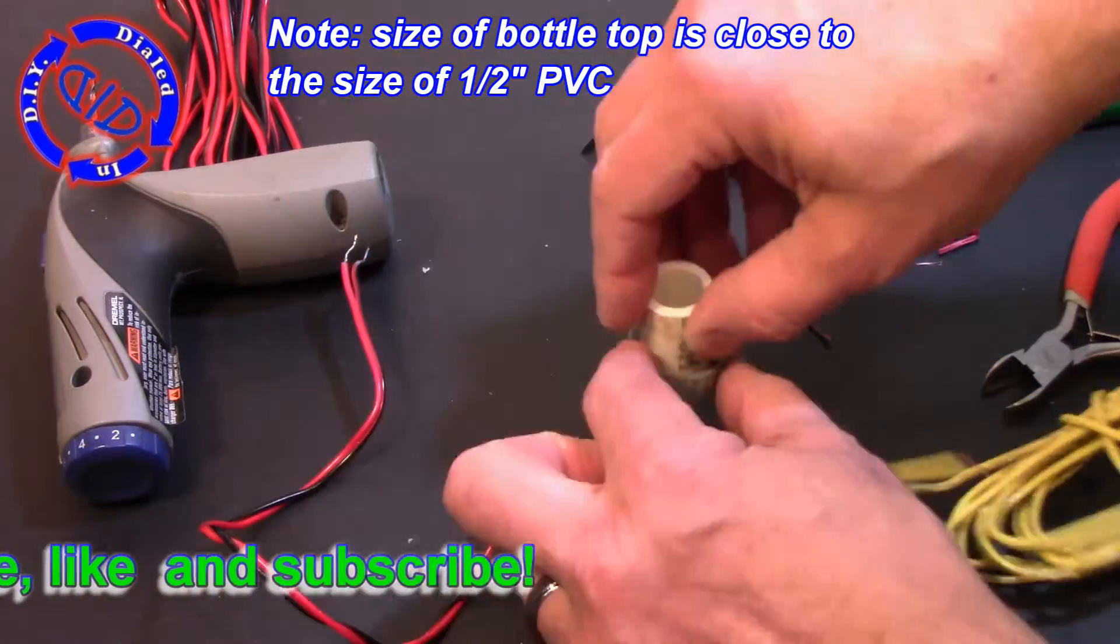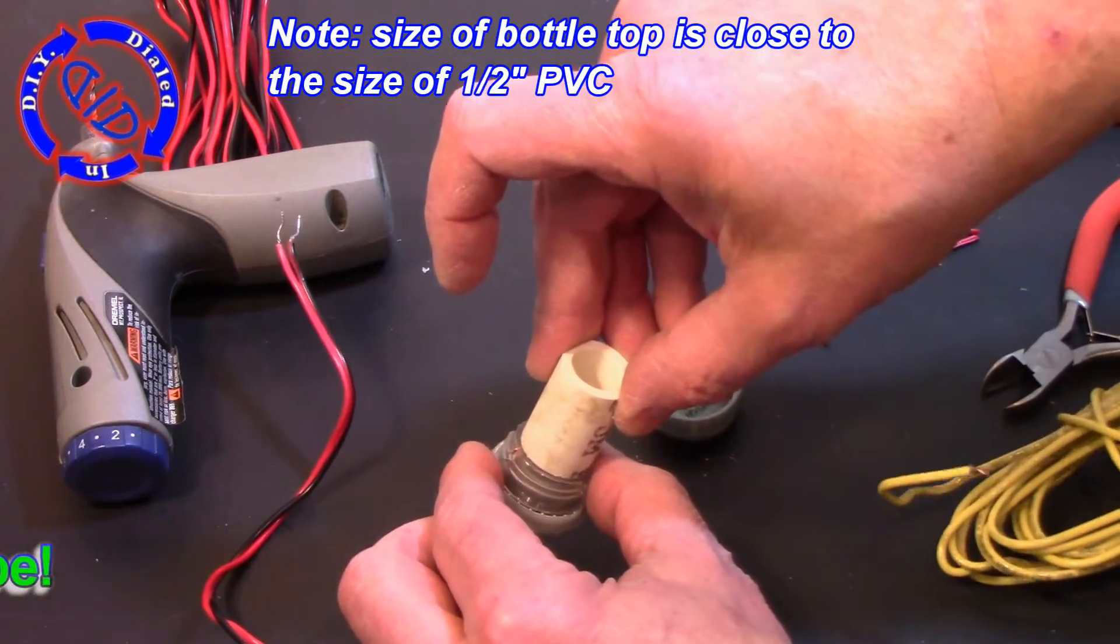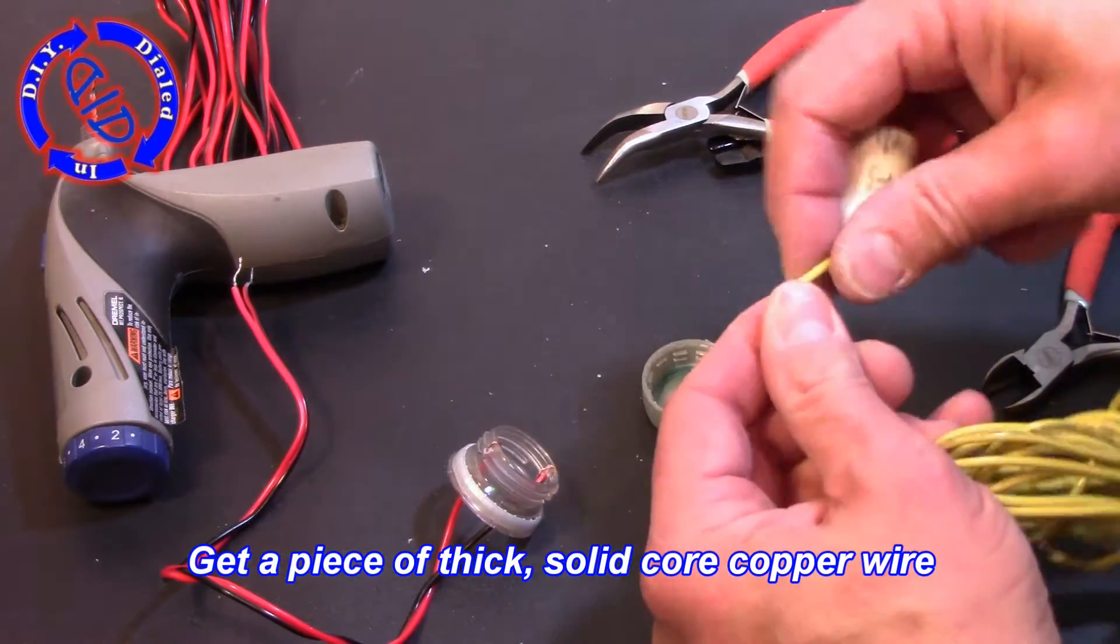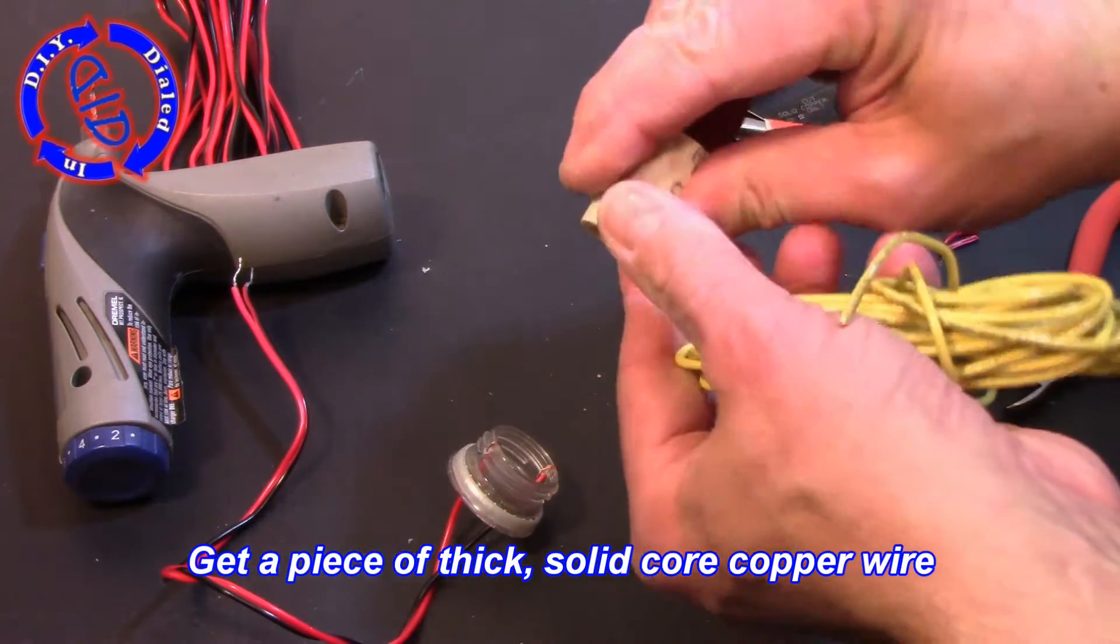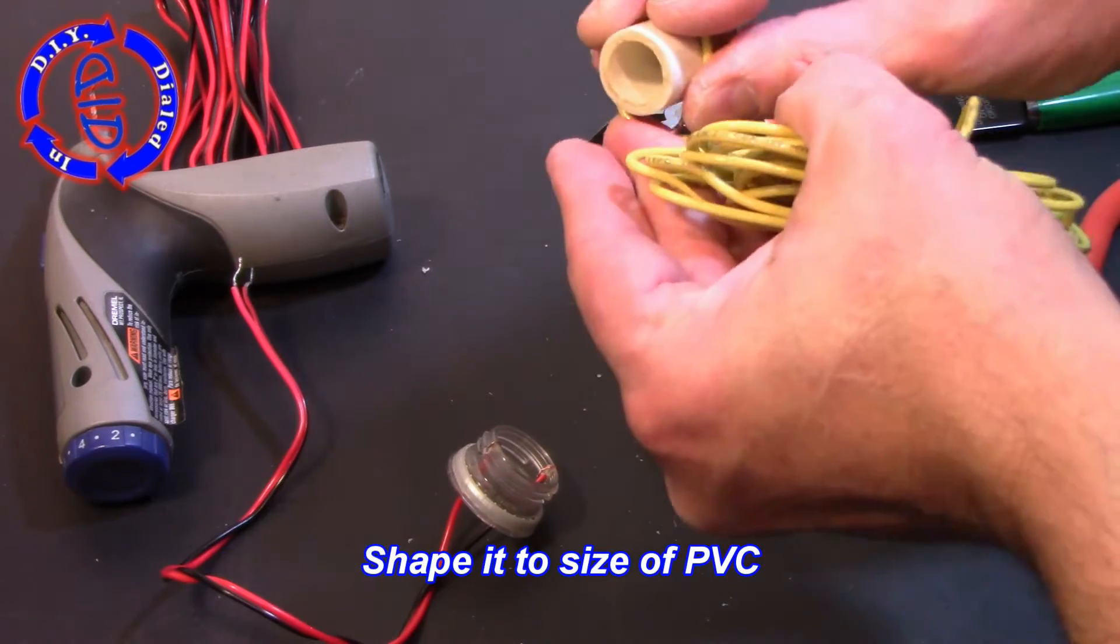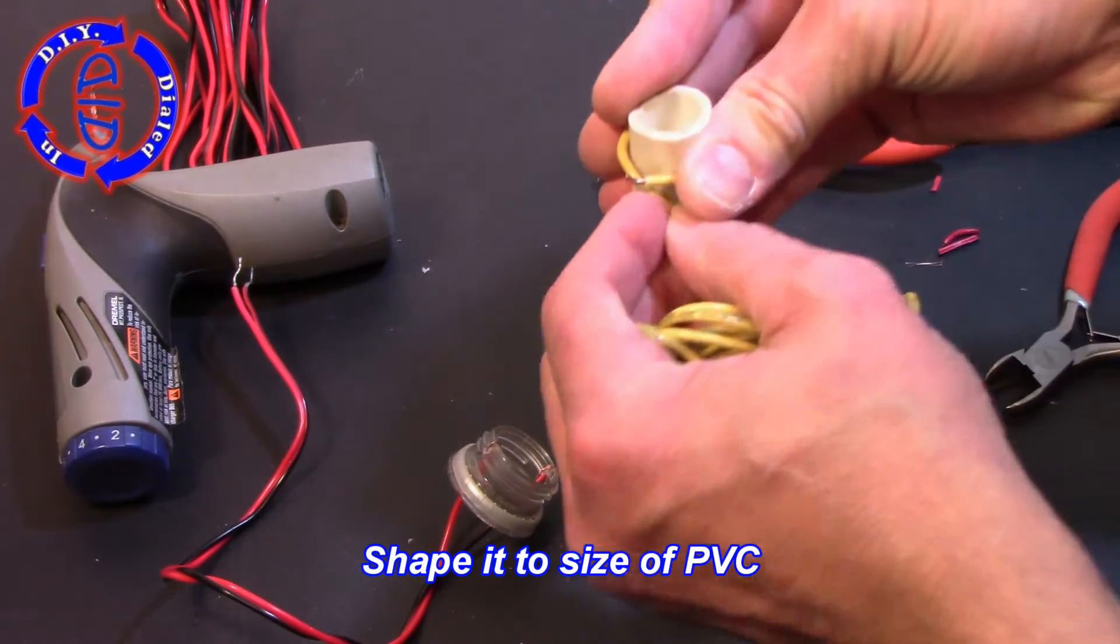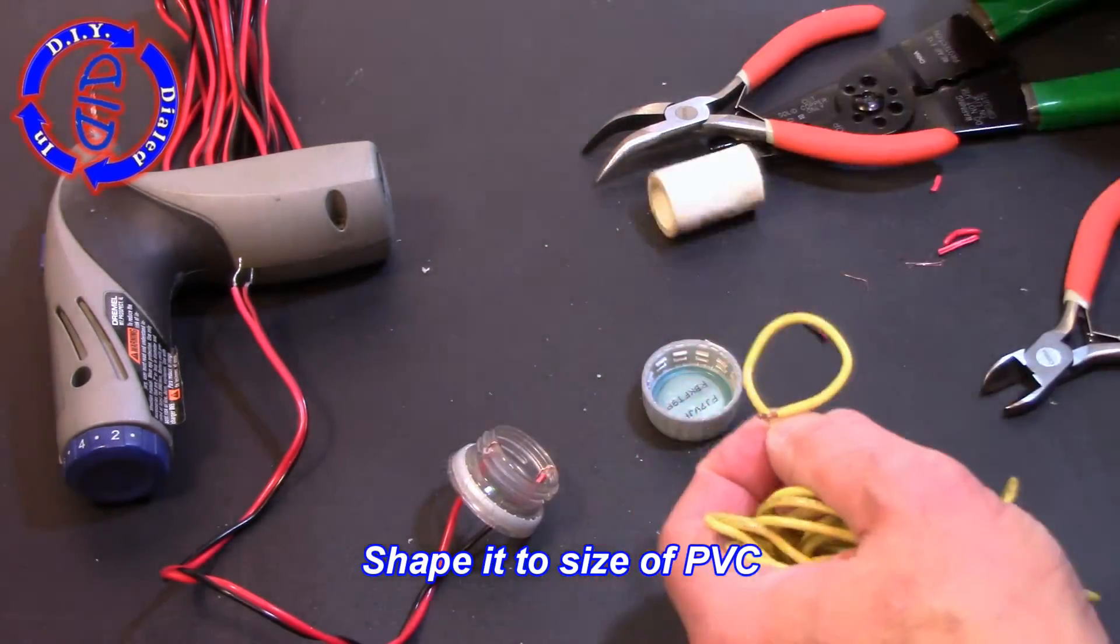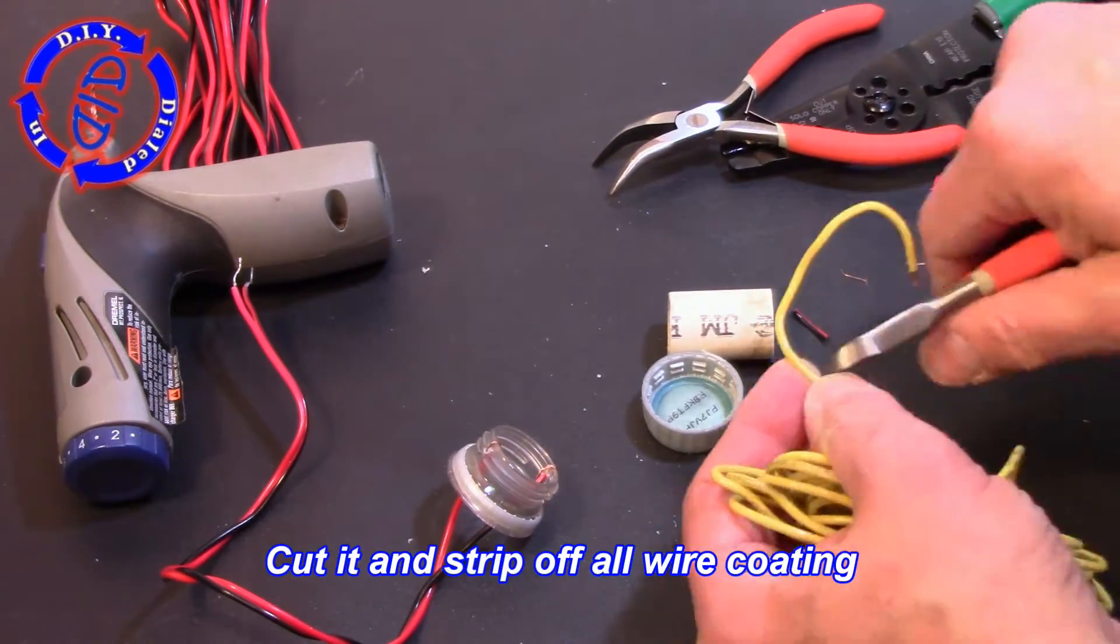Now we're gonna grab our thicker solid core copper wire and a piece of half inch PVC and we're gonna wrap it around here. That's how we're gonna figure out how much of this wire we need. It's perfect because the half inch PVC is actually the ideal size for the kind of cap that we're working with here on a 12 ounce bottle.